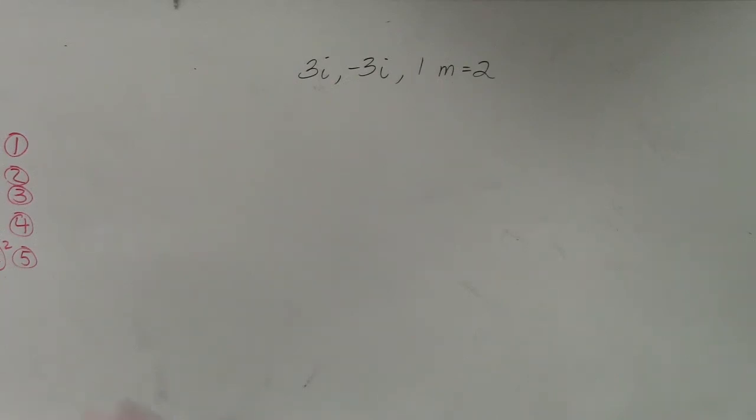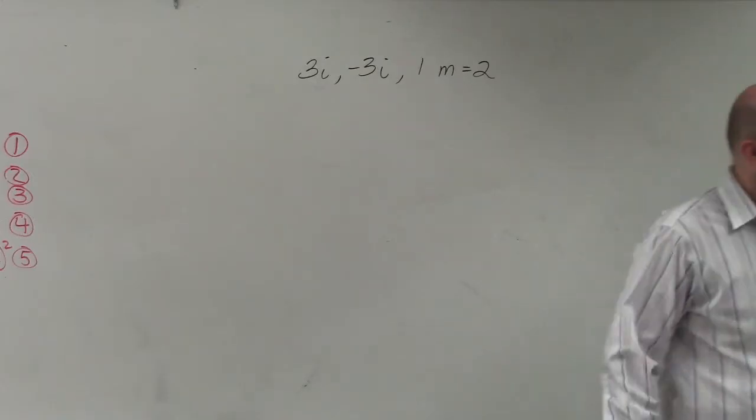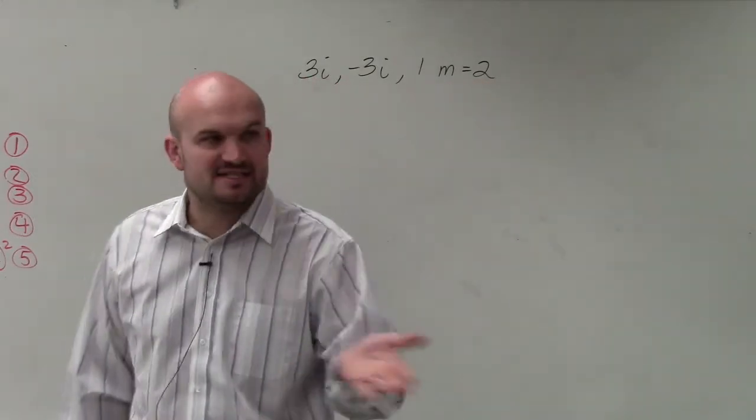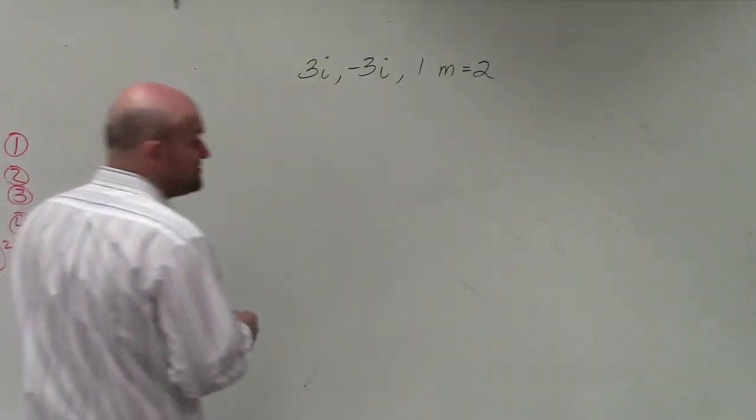What they're giving us is the zeros. If you read the problem, it says given the zeros. Any time you're given the zeros, we set them equal to x. As I mentioned, we can write them as factors.